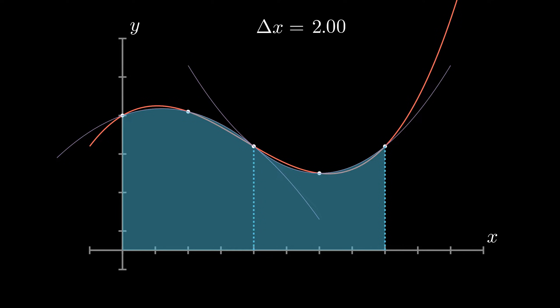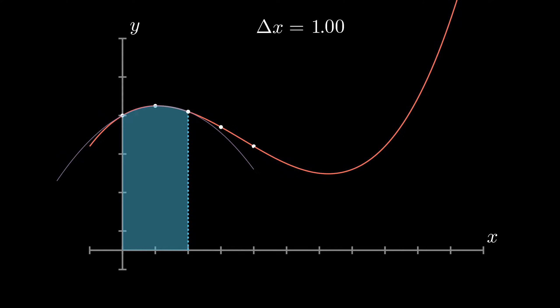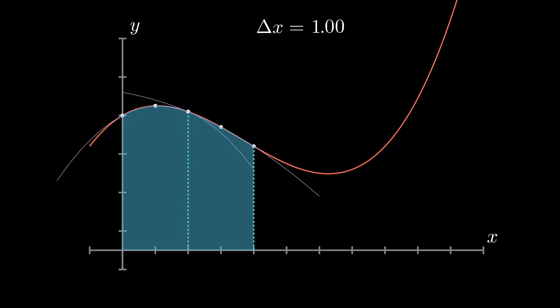This might seem to be a bad approximation at first sight, but as we decrease the size of the interval delta x, the error considerably decreases. I am not going to show the error analysis here but check the description if you are interested.